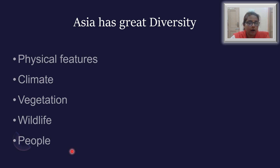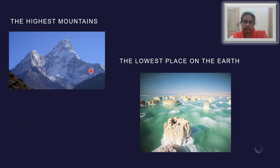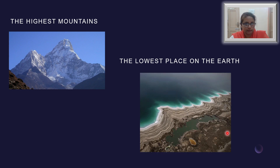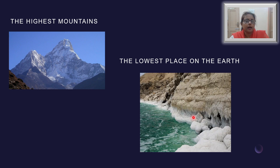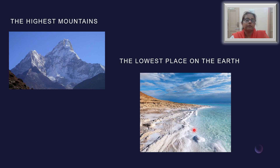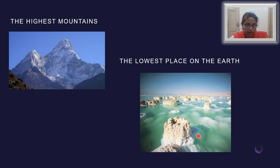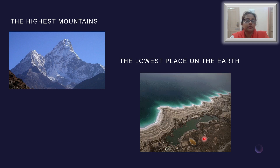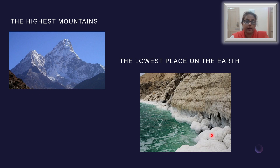Let us now see how Asia is a land of contrast. Here you can see the highest mountain, that is Mount Everest, while the lowest place on the earth — nearly 400 meters below — is the Dead Sea. The Dead Sea has got a large amount of salt because it lies in a region with a very high rate of evaporation. So even if you do not know how to swim, you can actually float in the Dead Sea. As it is named, the Dead Sea does not have any life because of the huge amount of salt found in it.